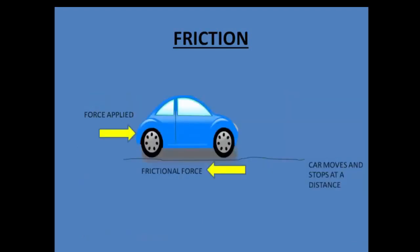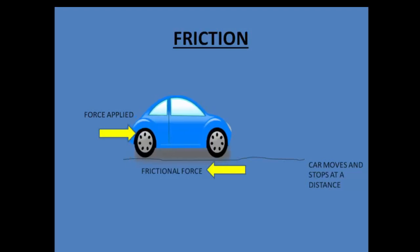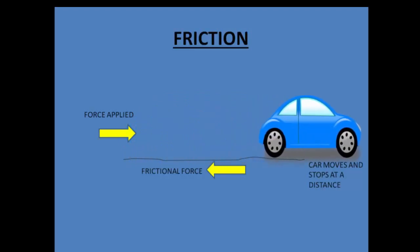Now let us consider another example. We all must have played with a toy car. I have taken a toy car here. When I apply a small force, the toy car moves to the right and then comes to a halt. Why does the car come to a halt? That is because the frictional force is applied on the toy car in the direction opposite to its motion, which restricts the movement of the car until it stops.